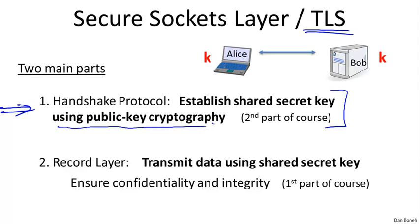Once Alice and Bob have the shared key, we can use this key to communicate securely by properly encrypting data between them. This is going to be the first part of the course — essentially, once the two sides have a shared secret key, how do they use that secret key to encrypt and protect data that goes back and forth between them.